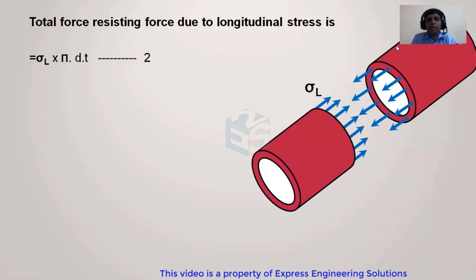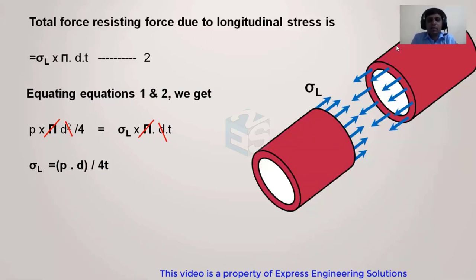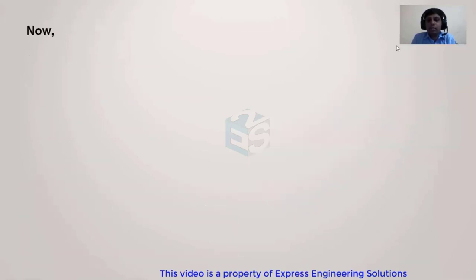Equating both expressions — the splitting force and the resisting force — the π and one diameter cancel out, giving the longitudinal stress formula: σL = P × d / (4 × t). So the longitudinal stress σL equals pd upon 4t.